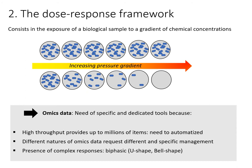Molecular data usually provide up to millions of items — for example, responses for hundreds of metabolites or millions of contigs — and it needs to be automatized. Nobody can check the responses one by one.